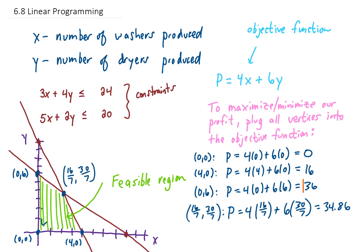So our largest profit number is $36 per day. So for this particular problem with these particular numbers, to maximize profit we want to make zero washers and six dryers per day.